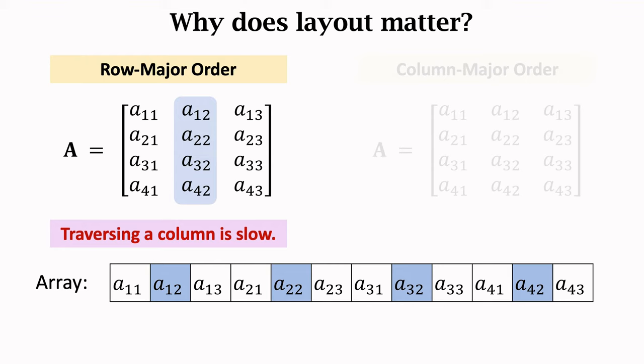Recall that when we traverse a row in the matrix, only one cache miss happens. For row-major order, traversing a row is much faster than traversing a column. This is due to spatial locality. If we want to frequently read or write rows, then we had better use row-major order. Likewise, if we frequently read or write columns, then we had better use column-major order.